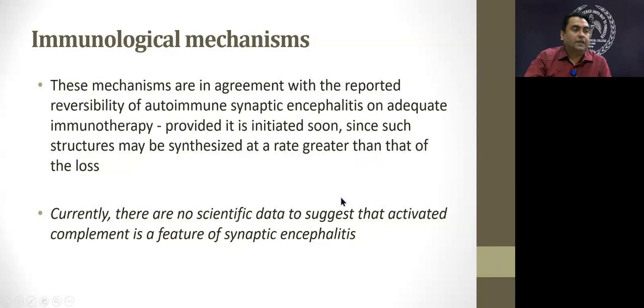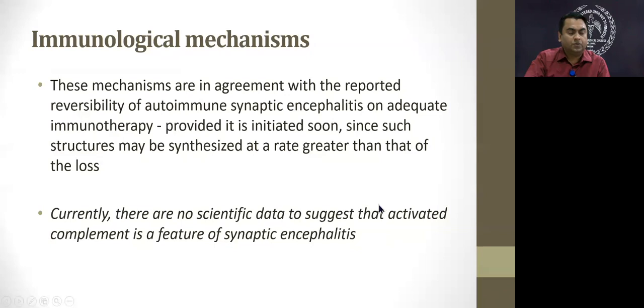These immunological mechanisms are consistent with the reversibility of autoimmune synaptic encephalitis — or cell surface encephalitis — with adequate immunotherapy, provided it is initiated early before further destruction occurs. There is no data to suggest complement-mediated injury in this form of encephalitis, considering only B cell and T cell mediated immunity is involved.